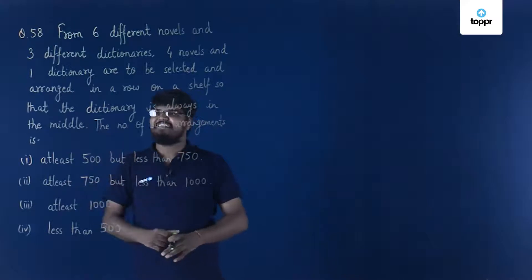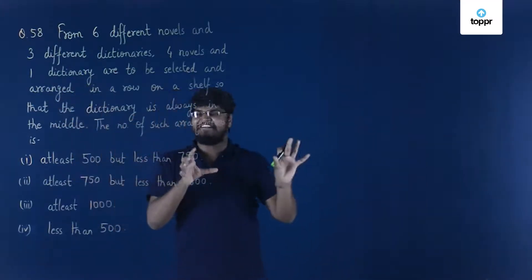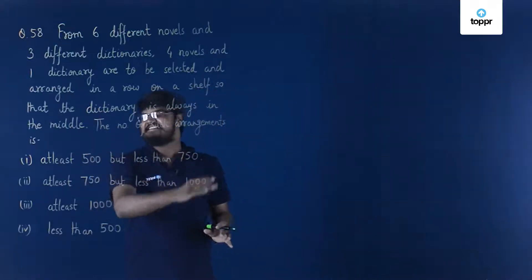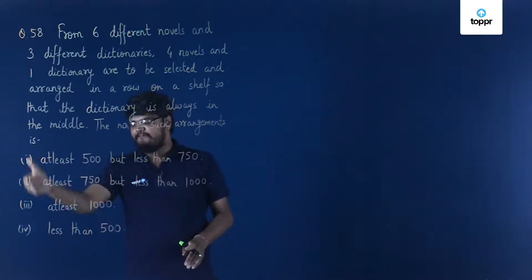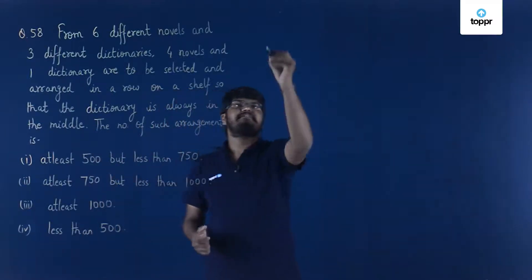Too much wordplay over here, but in short it says that you have to select these and arrange on a shelf. So the number of such arrangements is - we are given four options and we have to find the answer and see which of these four options is valid. So, let us start with the solution.